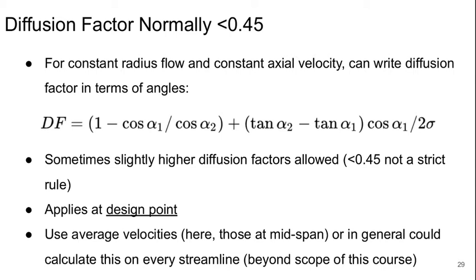Normally we constrain the diffusion factor to be less than about 0.45. For constant radius flow and constant axial velocity we can write the diffusion factor in terms of the flow angles and the diffusion factor can be expressed as shown here. Sometimes slightly higher diffusion factors are allowed, especially in fans. An important thing to understand is that it is a design point quantity. Talking about the value of the diffusion factor at an off-design operating point is pretty meaningless. Normally we would use the average velocities or those at mid-span, or in general you could calculate the diffusion factor for every streamline, which is beyond the scope of this course.